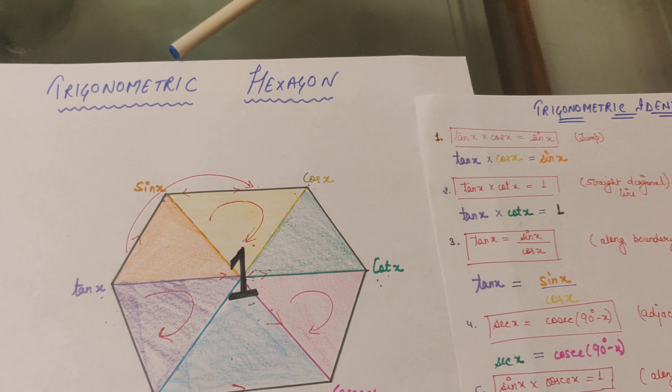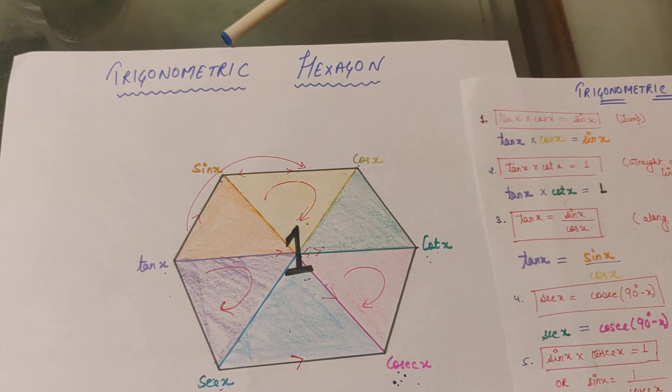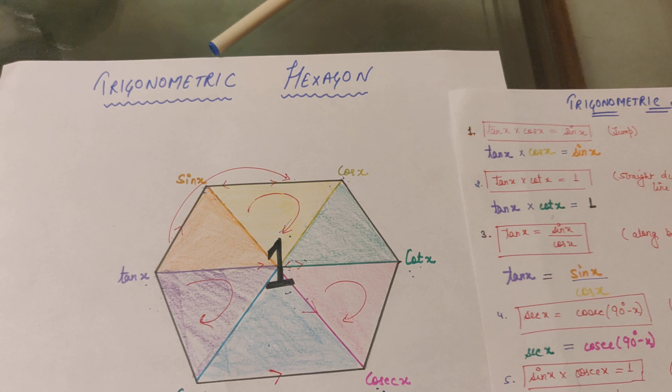The subsidiary identities are derived from these basic ones by rearranging: sin²x = 1 - cos²x by moving cos²x to the other side. Similarly, 1 = csc²x - cot²x, and 1 = sec²x - tan²x. All other identities are derived from these basic ones by just changing positions.